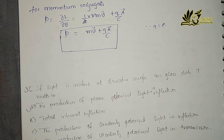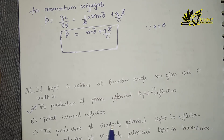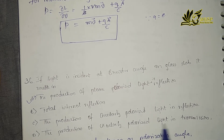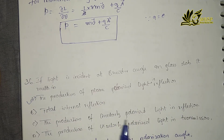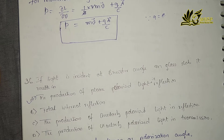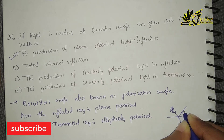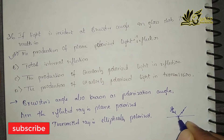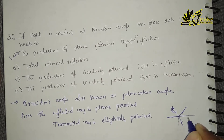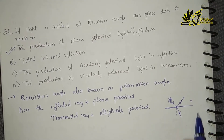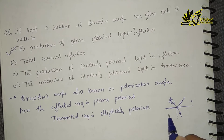Now let's go for question number 36. If light is incident at a Brewster's angle on a glass slab, it results in the production of plane polarized light in the reflection. At Brewster's angle, the incident ray at a certain angle of incidence — the reflected ray gets a polarization. At that certain angle when we are incident, the reflected ray will be plane polarized, meaning it will be polarized parallel to the interface, like in and out of the page.